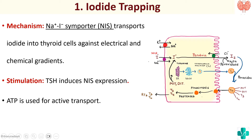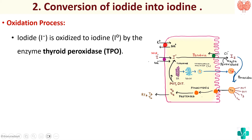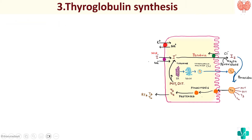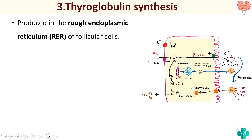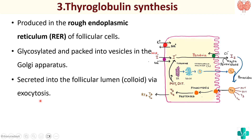The second step was conversion of iodide to iodine. Iodide is oxidized to iodine with the help of the enzyme thyroid peroxidase, and this occurs at the apical membrane of the follicular cell. The third step was thyroglobulin synthesis, in which thyroglobulin is produced from the rough endoplasmic reticulum, packed into the Golgi apparatus, and finally secreted into the follicular lumen with the help of exocytosis.